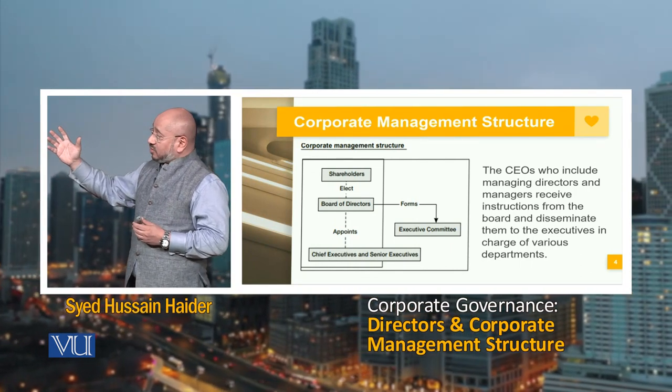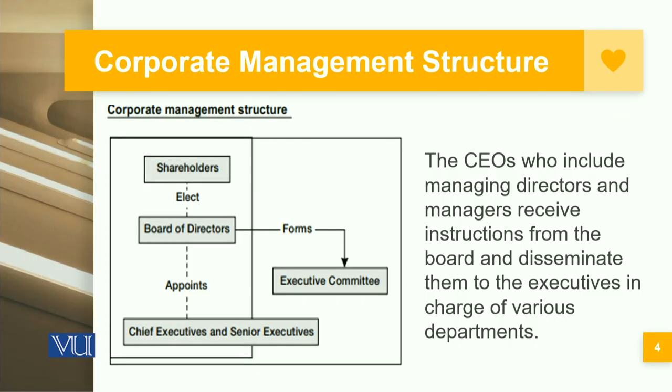Looking at this corporate management structure diagram, on one side are the shareholders who elect the board of directors. The board of directors then, through a proper merit-oriented and transparent framework, appoints the Chief Executive Officers and senior executive officers — the C-suite chief officers of the organization.